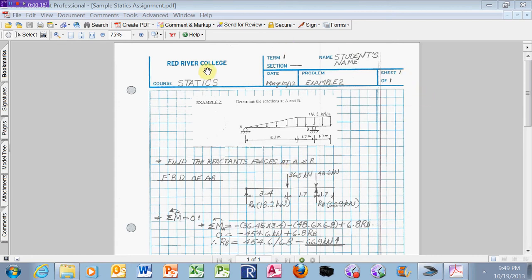As you can see, we have a problem on the screen. Now all of your assignments are done on what we call Red River problem paper, which is a grid paper as you see here.